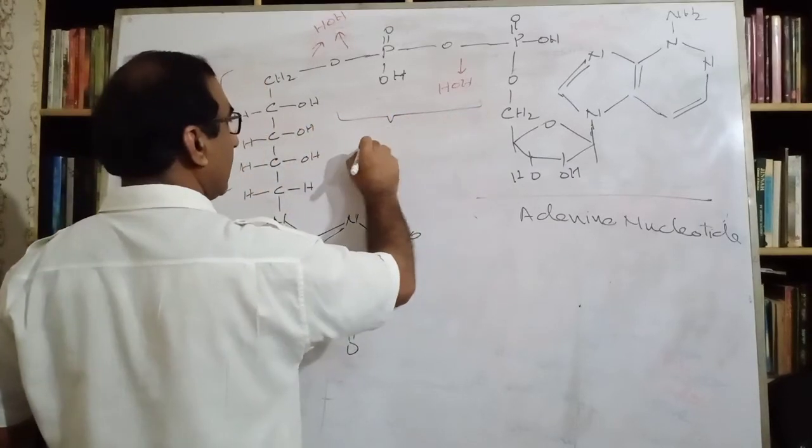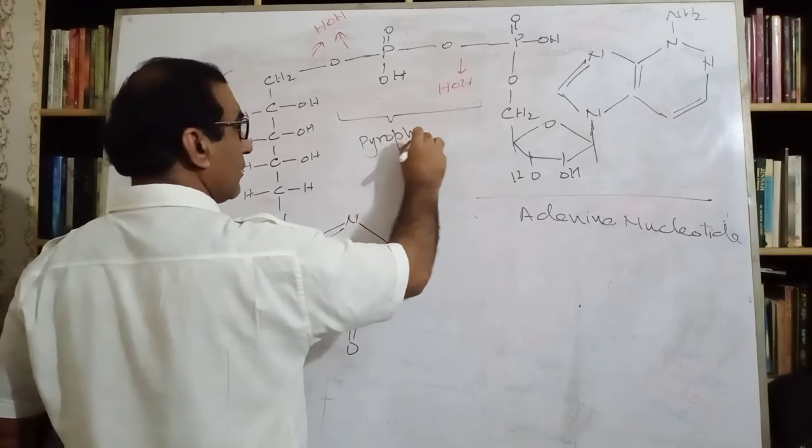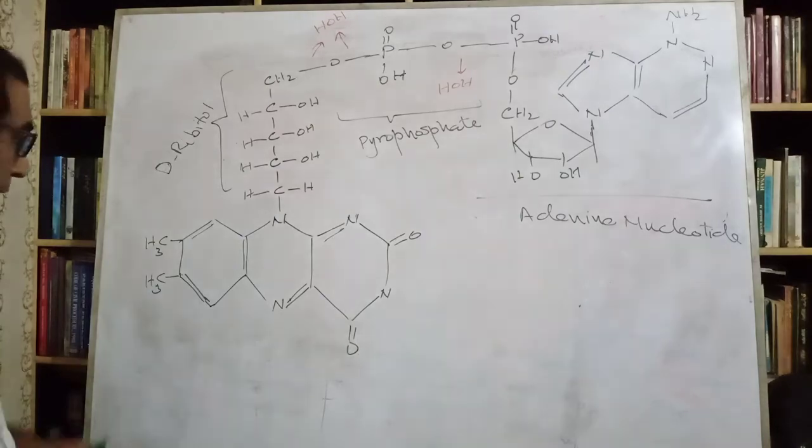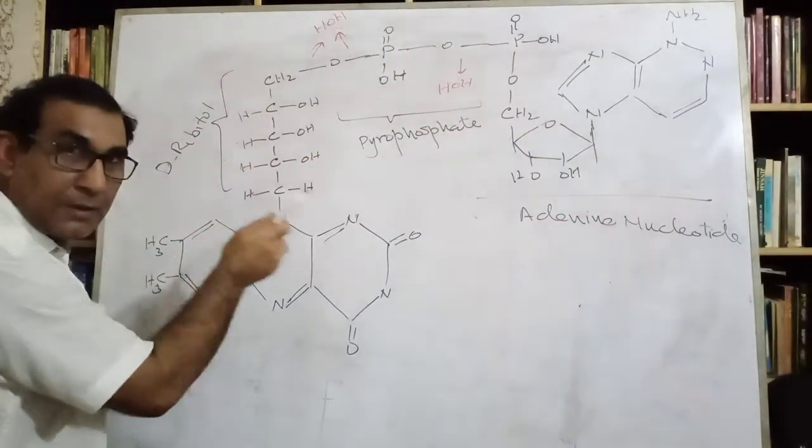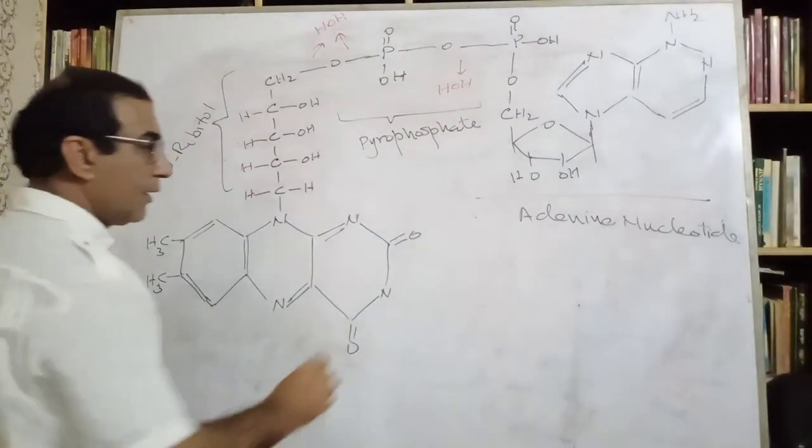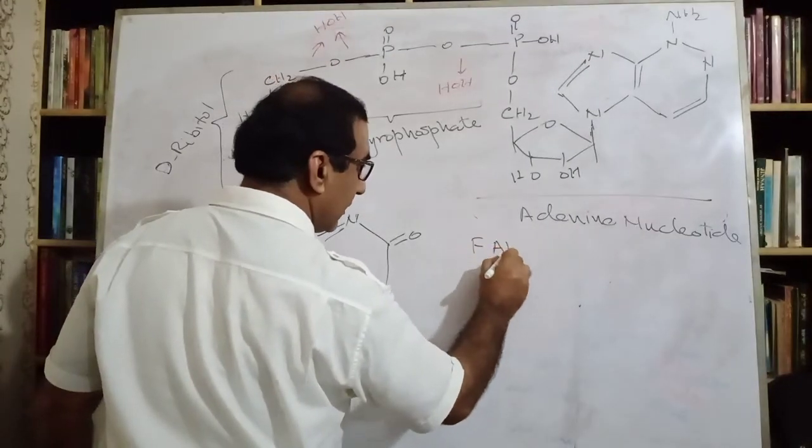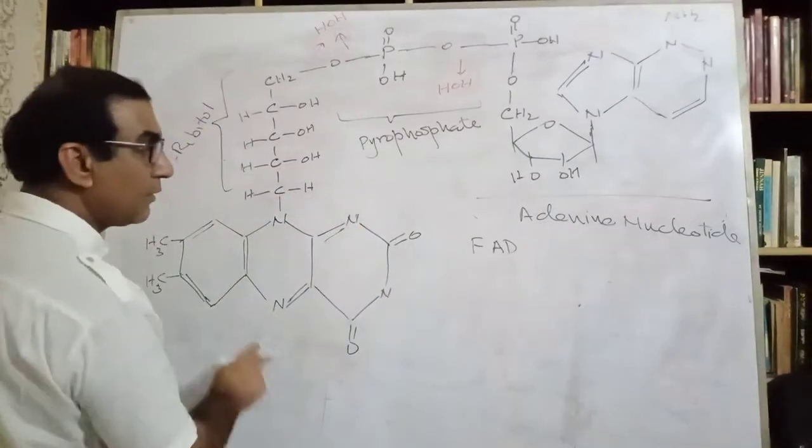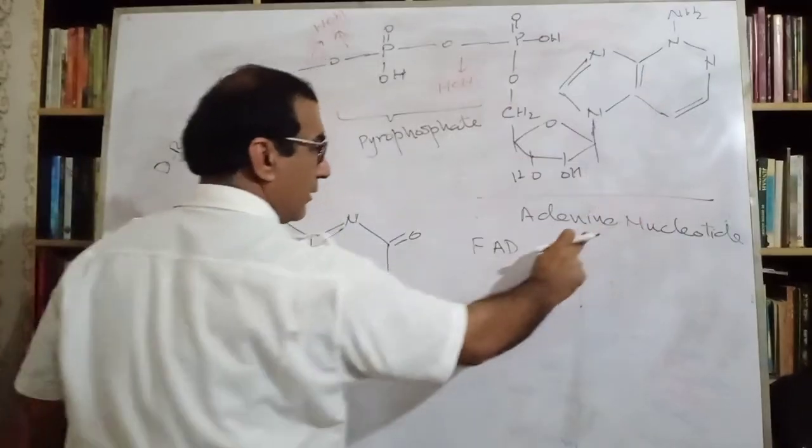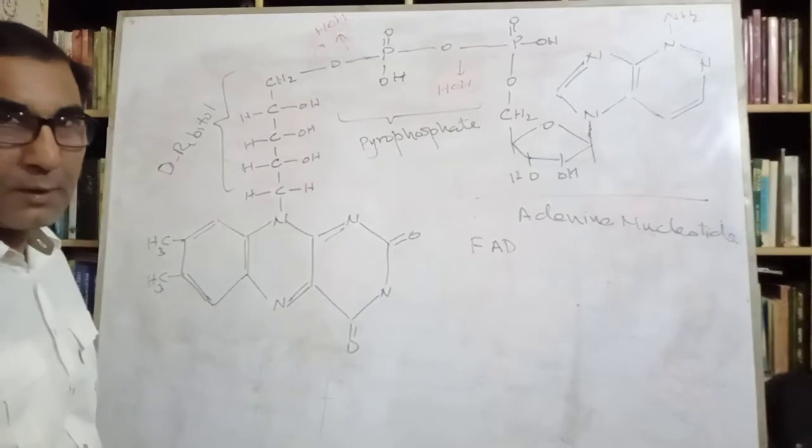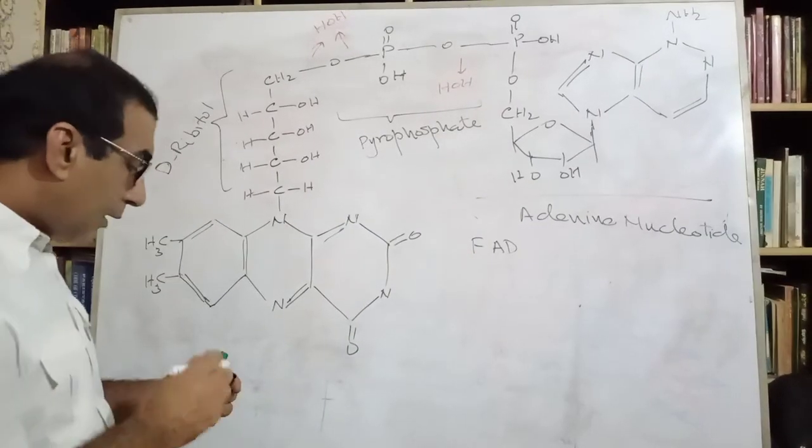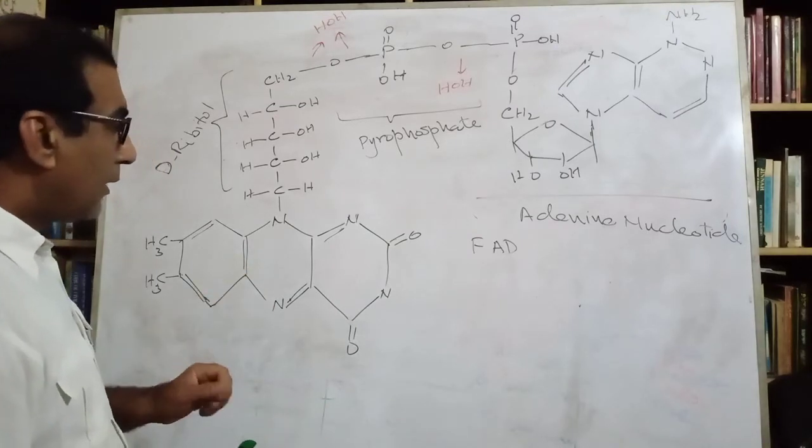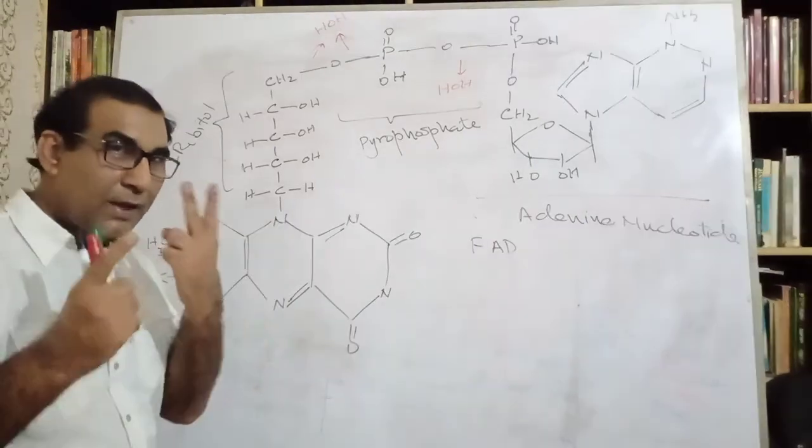But this is what now you can call it pyrophosphate, and this whole structure is FAD, Flavin Adenine Dinucleotide.